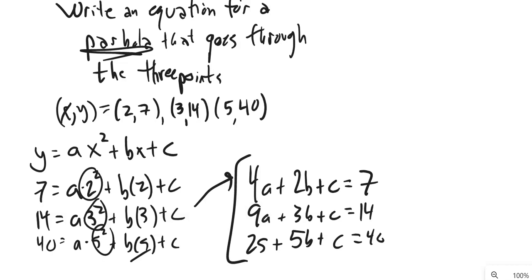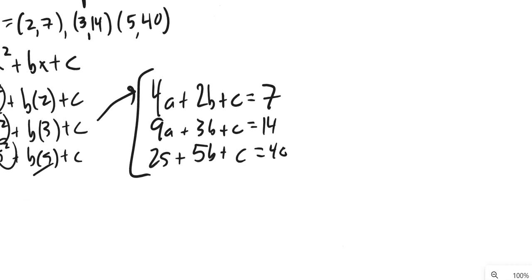5 squared is 25. 25a plus 5 times b plus c equals 40. And this is, this could be an exercise on its own. Solve this system. Great. So, let's solve that system then.